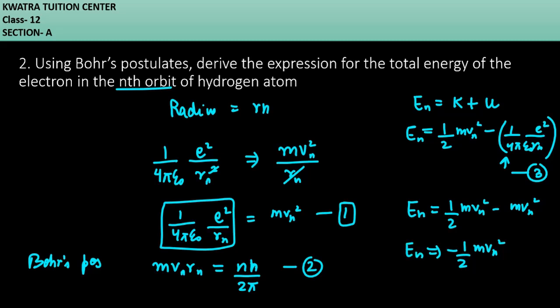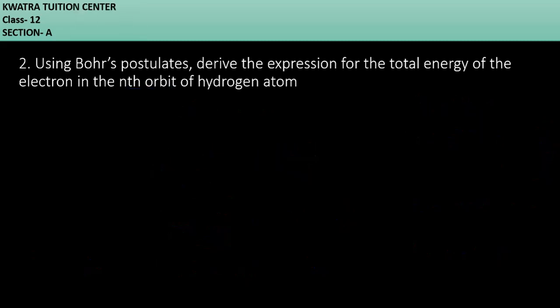Now what do we have to do? You have to solve the first equation and the second equation. Then we'll find the value of vn from it. We'll get vn is equal to mvn square rn over mvn rn. mvn square rn ki value apki nikal aegi. N h over 2 pi.